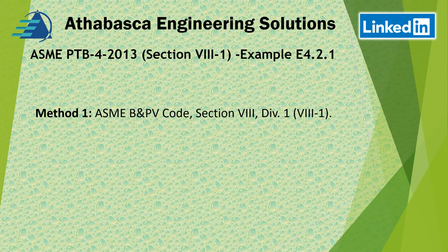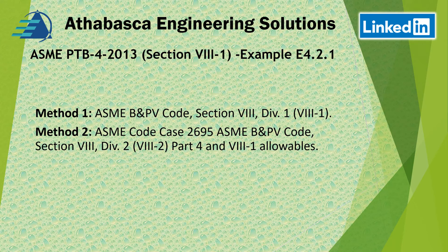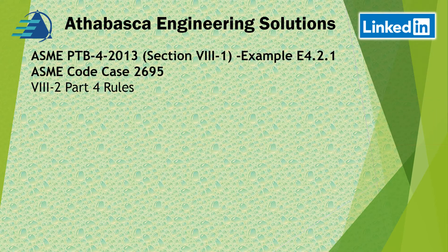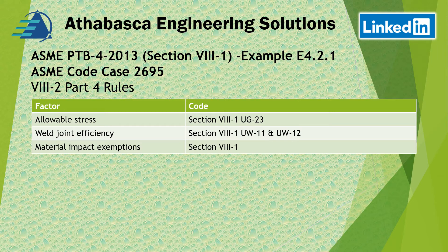Now we're going to dive into method 2, based on ASME code case 2695. There are some general rules: allowable stresses must come from Section 8, Division 1; joint efficiency follows UW-11 and UW-12; impact exemptions follow Section 8, Division 1. This applies specifically to butt welds in the shell or head — there are separate rules for nozzles.